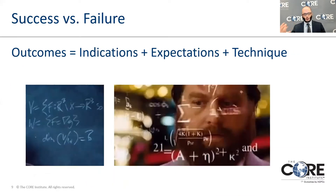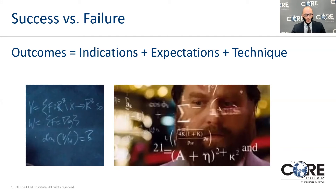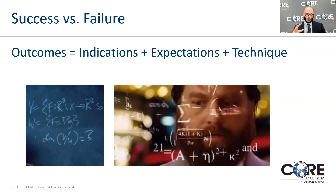When we talk about how patients will respond to surgery and their outcomes, it's a combination of different variables. The technique of the surgery is definitely important, but the expectations before surgery are equally important. Most importantly, are we doing surgery for the right problem for the patient? We need to make sure the abnormalities on imaging correlate to the patient's symptoms, and that we discuss the benefits, risks, and alternatives to surgical management.